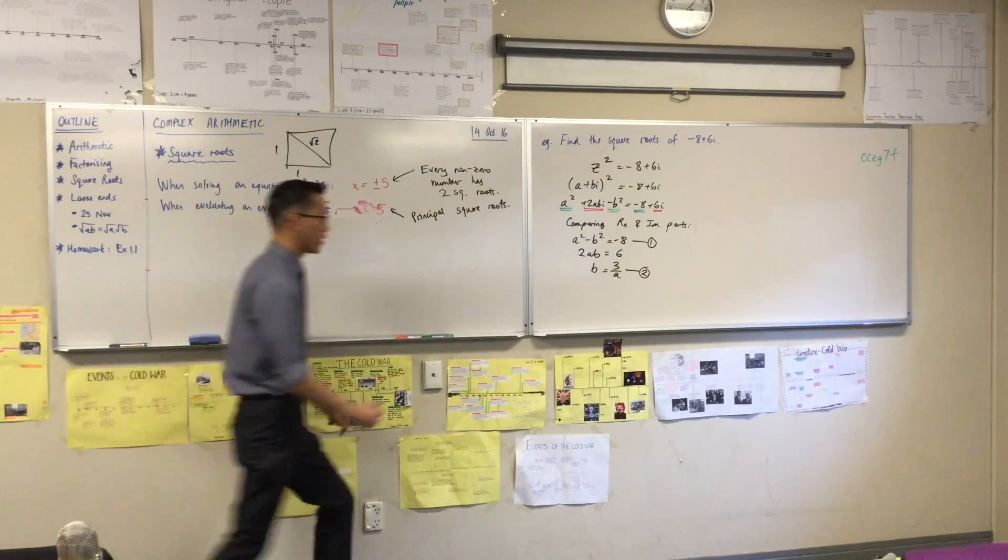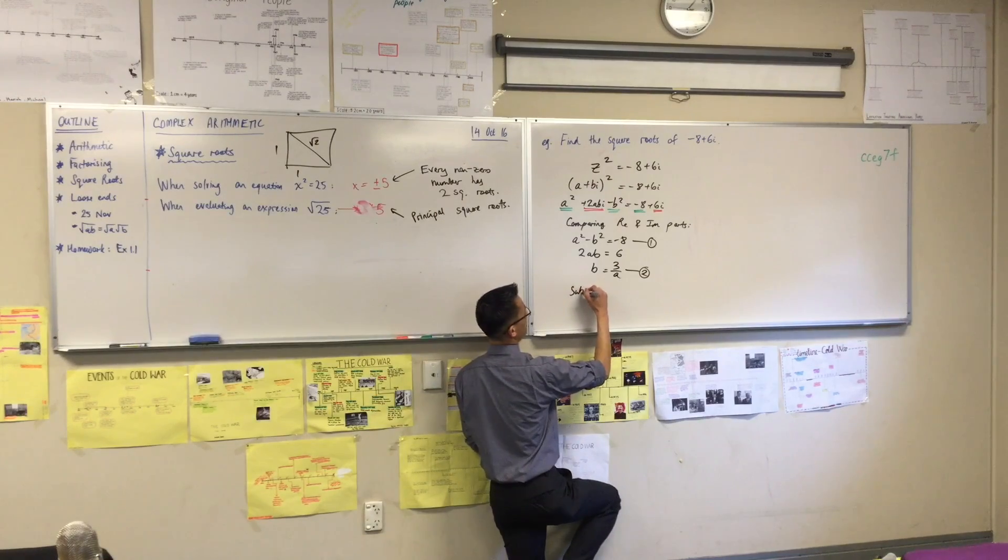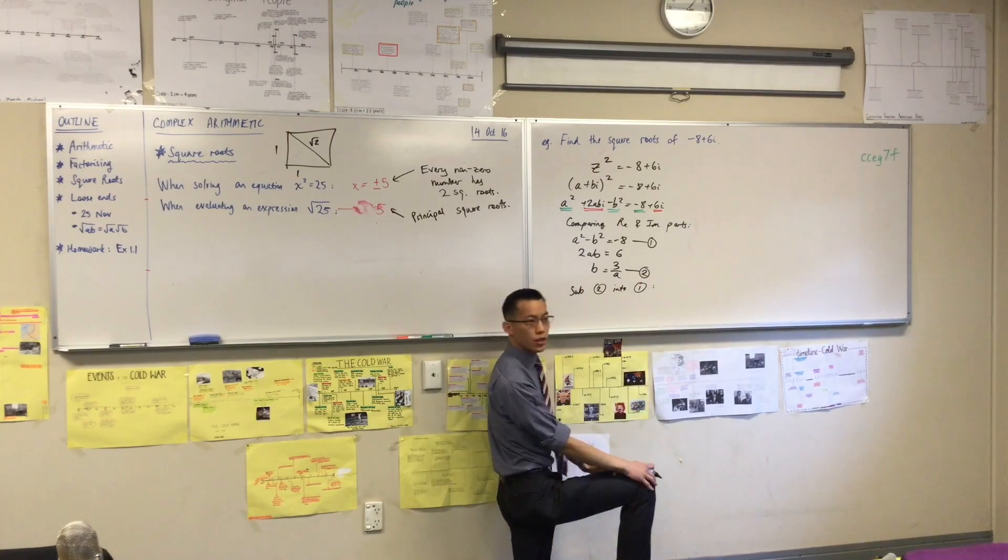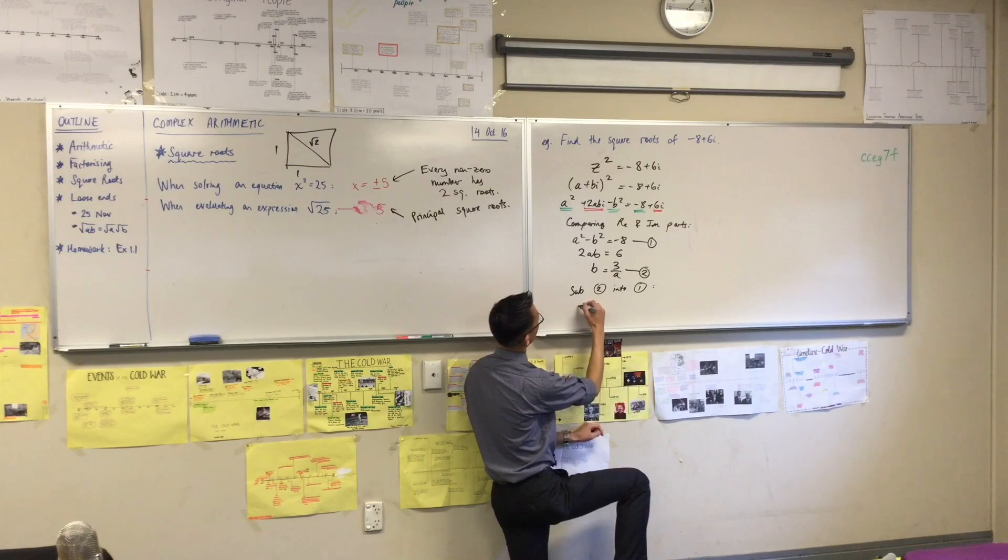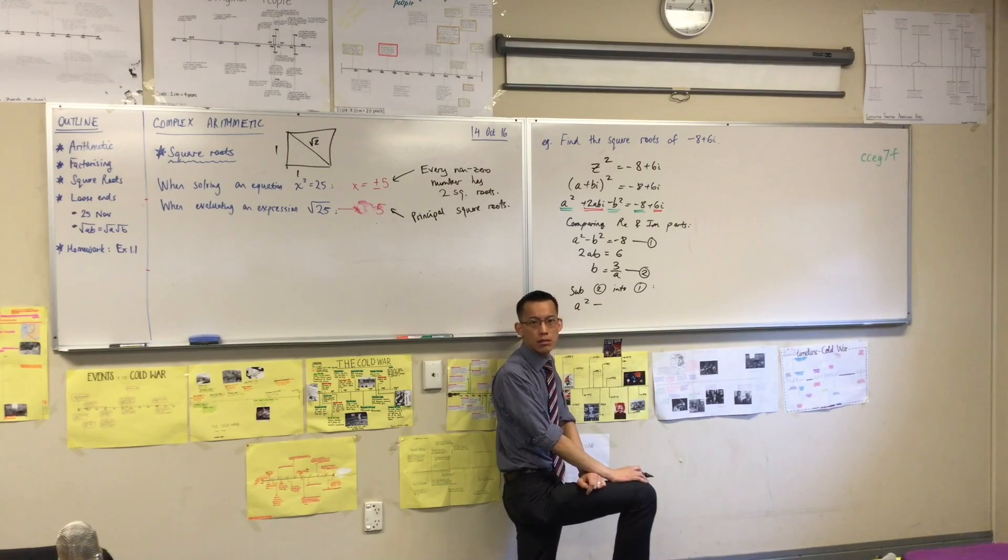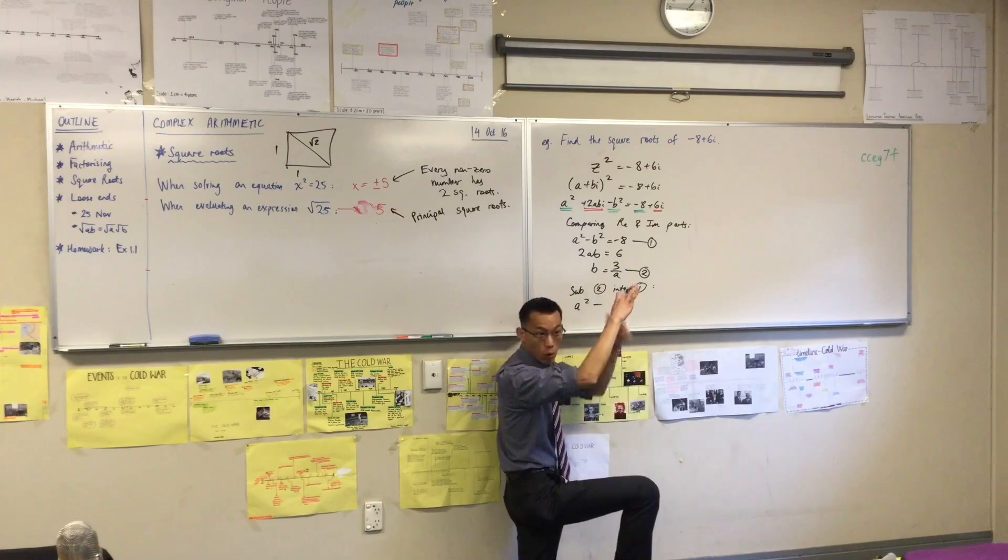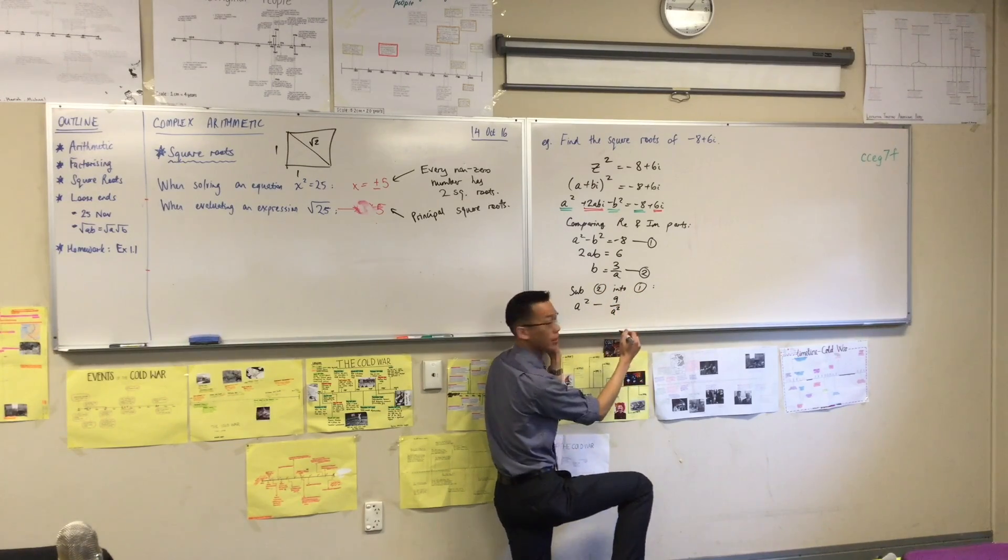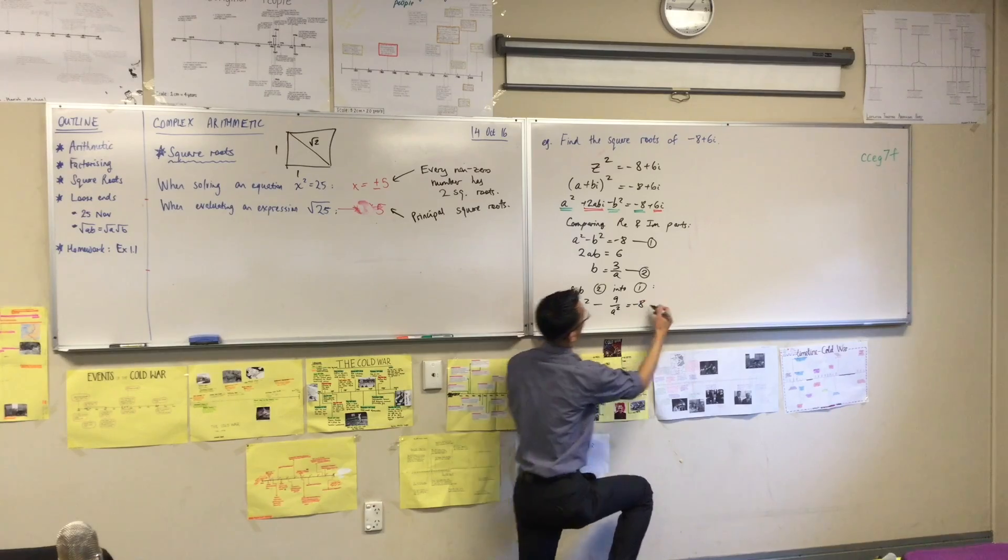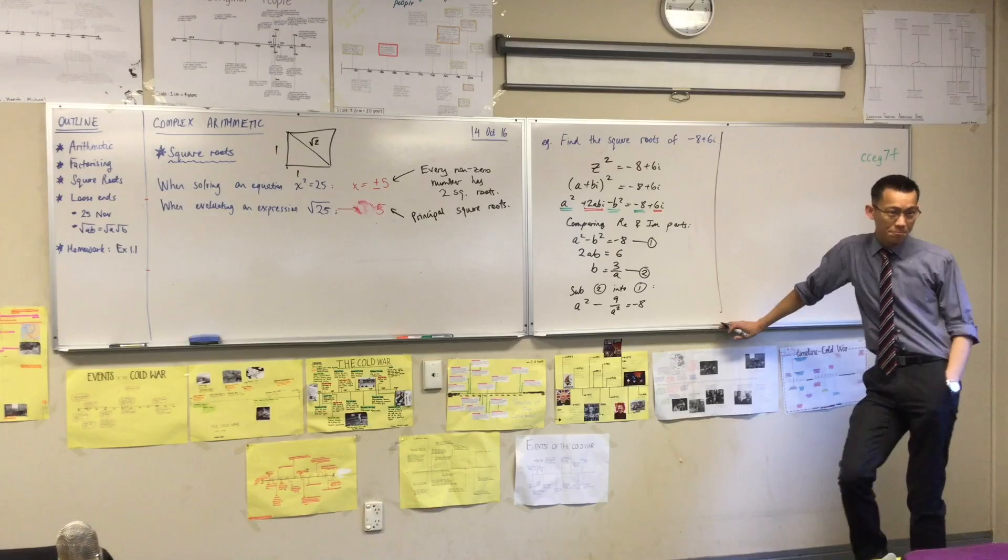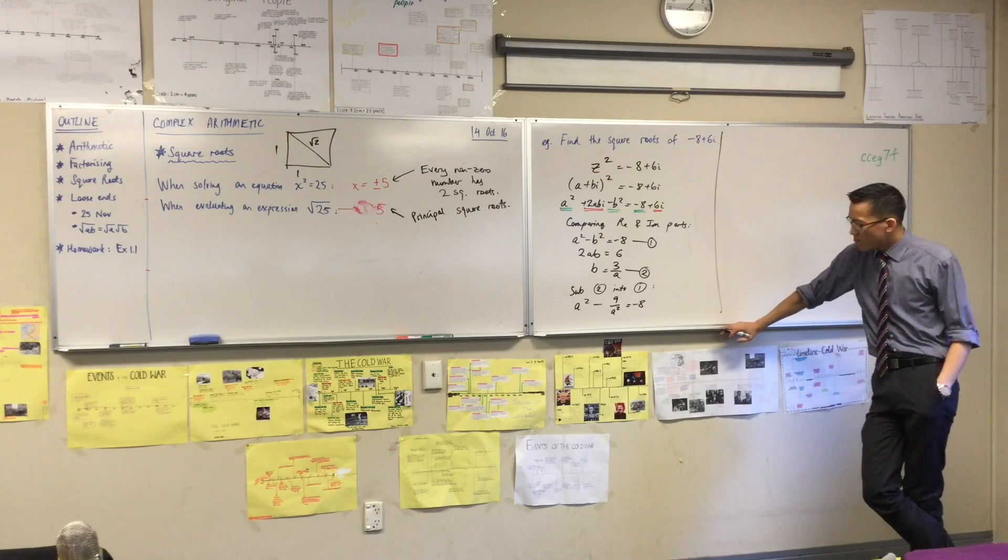Now, this is fairly straightforward. I'm now going to substitute 2 into 1. So that gives you this awkward-looking thing. a squared take away what? 3 on a all squared. Which is 9 on a squared. That's equal to negative 8. Let's continue, right? I want to solve this thing. I want to find out what a is. What would you let me do with it?